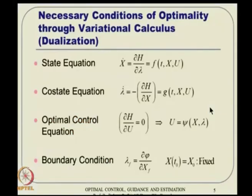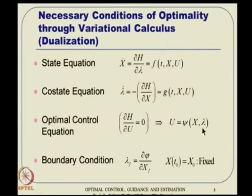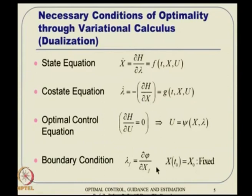The necessary conditions of optimality through variational calculus involve dualization of the problem. We have the state equation, and along with the state, we assume a costate equation — another set of equations of the same dimension with lambda dot. There is also an optimal control equation, which is a stationary equation. If you solve it, we get control as a function of state and costate. Associated boundary conditions exist: the initial condition is for the state, and the final condition involves either the state or the transversality condition. The state equation evolves forward, the costate equation backwards — a split boundary condition problem, hence a two-point boundary value problem.